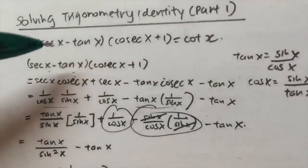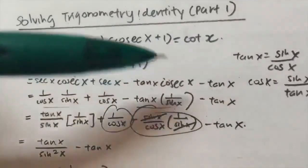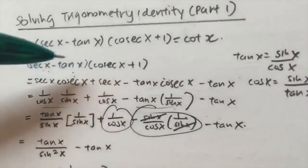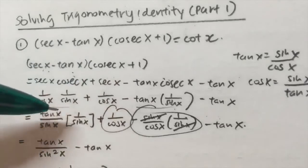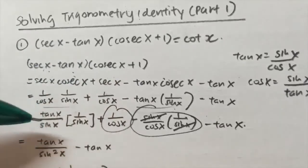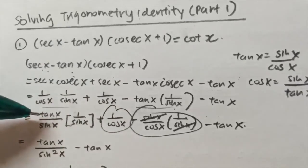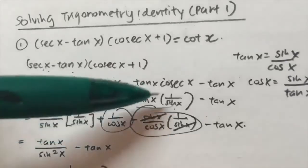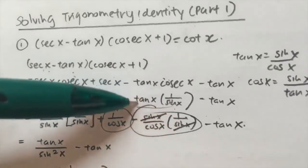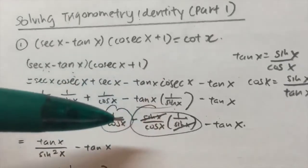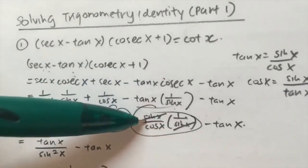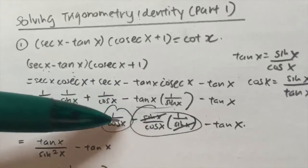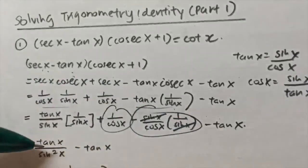To solve this type of trigonometry identity question, first expand the equation out. Then I convert 1 over cos x into tan x over sin x. Here I convert tan x into sin x over cos x. After that I cancel off the sin x terms, leaving 1 over cos x. I subtract this away and get 0, which leads down to tan x.